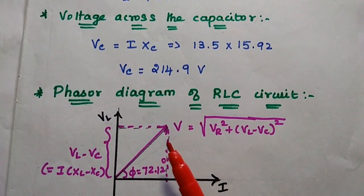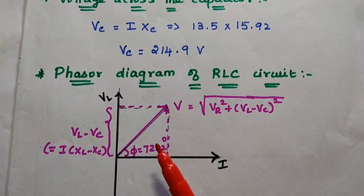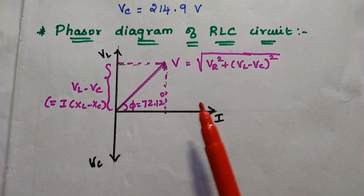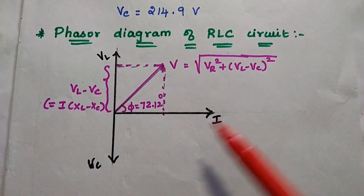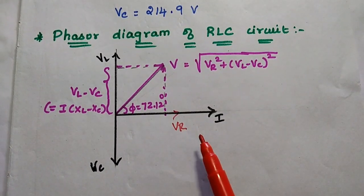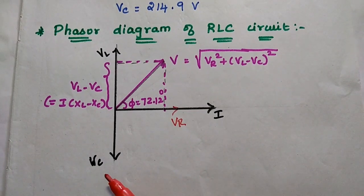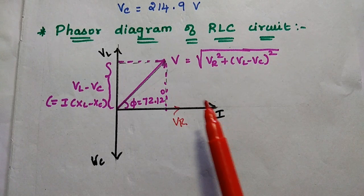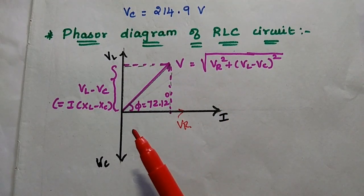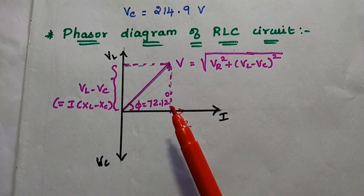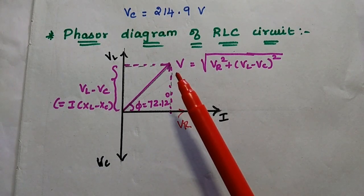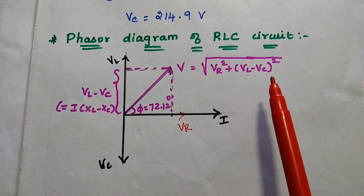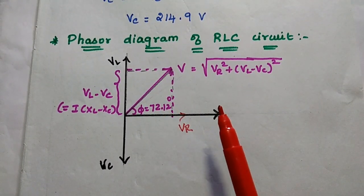In this RLC circuit, we consider the coil as a combination of R and L, that is an RL circuit. For the phasor diagram, we take the current in this direction. For the resistive element, voltage and current are in phase. For the capacitor, the current leads the capacitive voltage by 90 degrees. For the inductor alone, the current lags behind VL by 90 degrees. As a combination of this RLC series circuit, the phase value is 72.12 degrees, and the resultant voltage magnitude is the square root of VR squared plus (VL minus VC) squared. This is the final phasor diagram for this given problem.